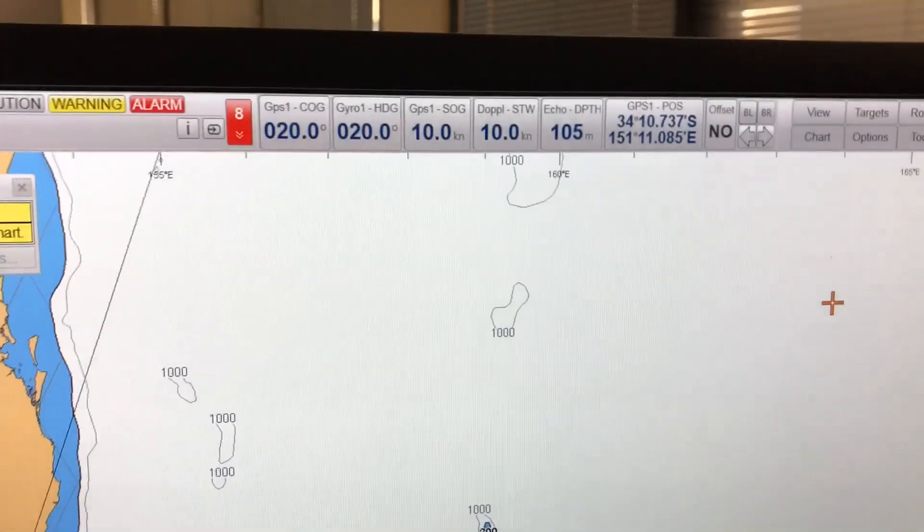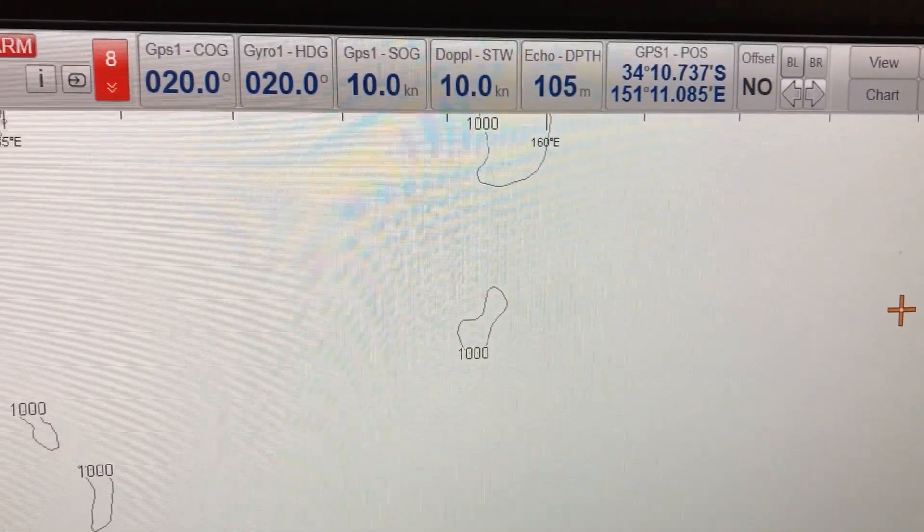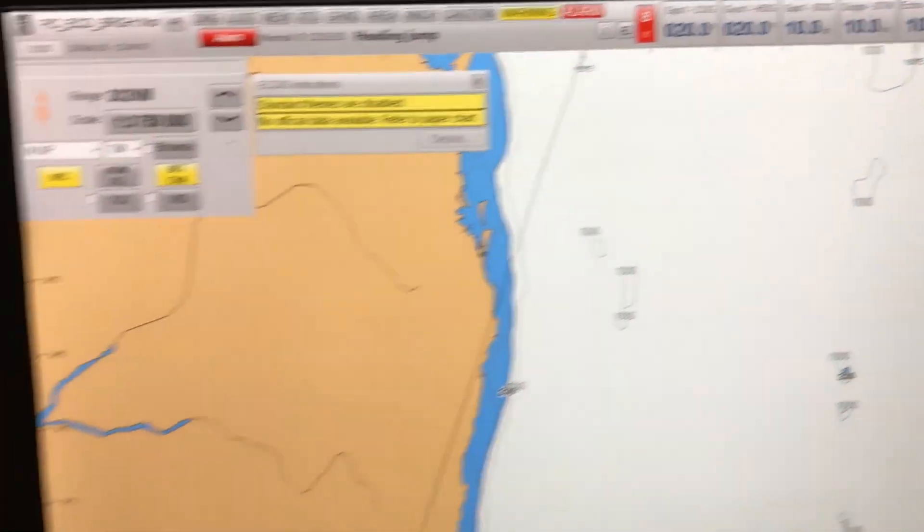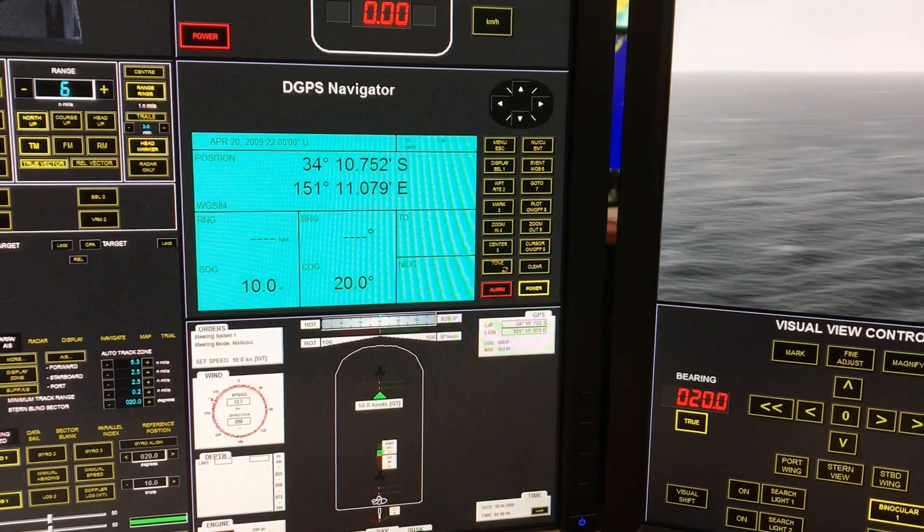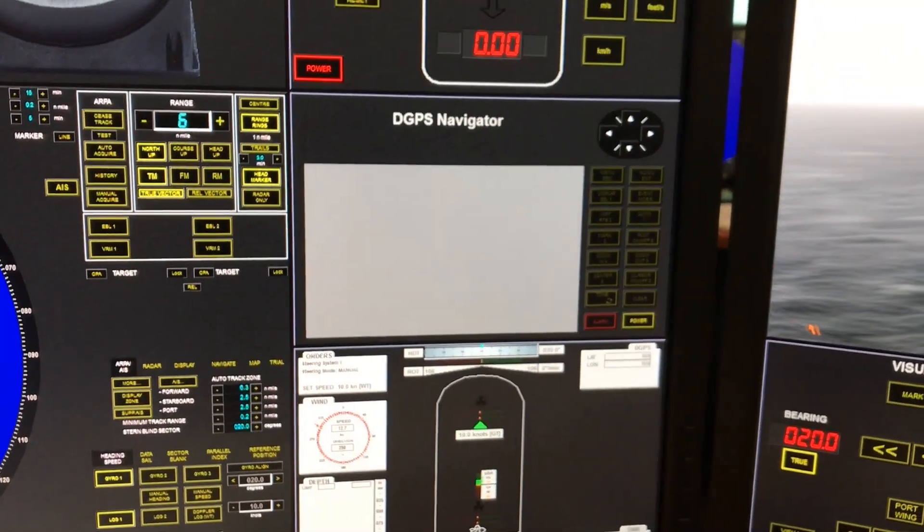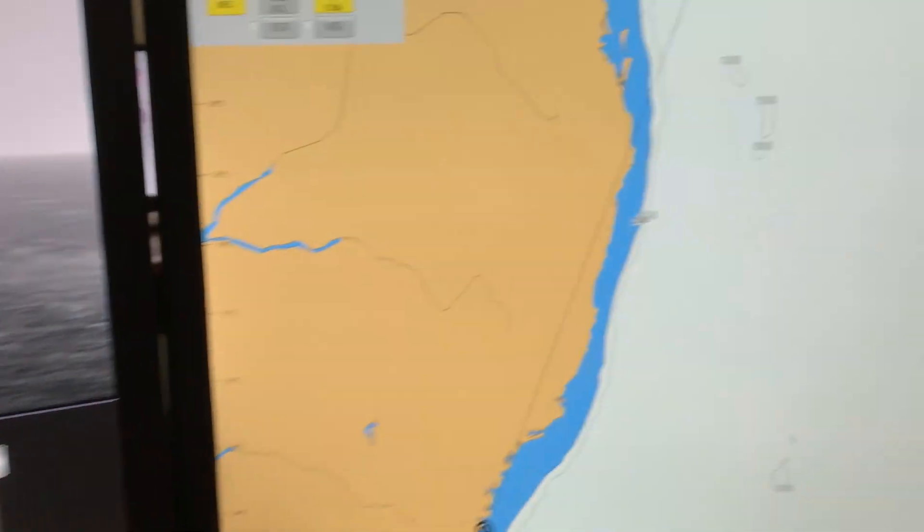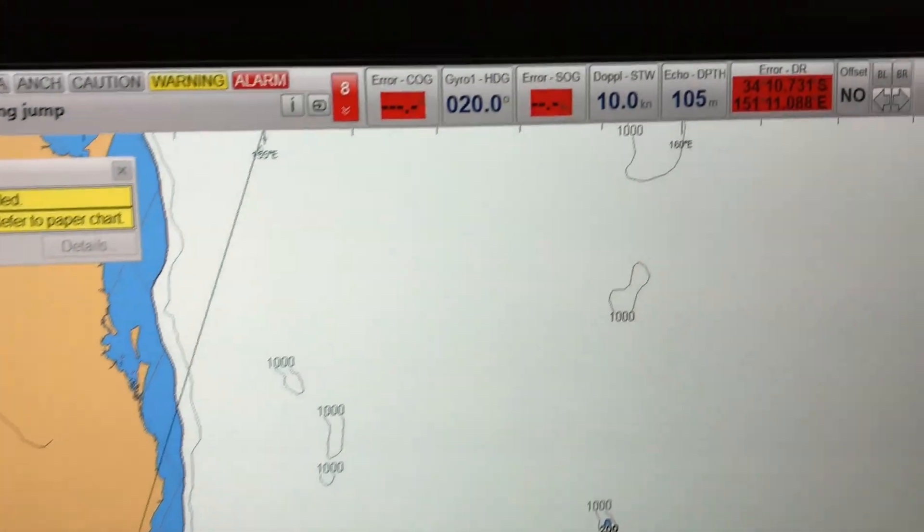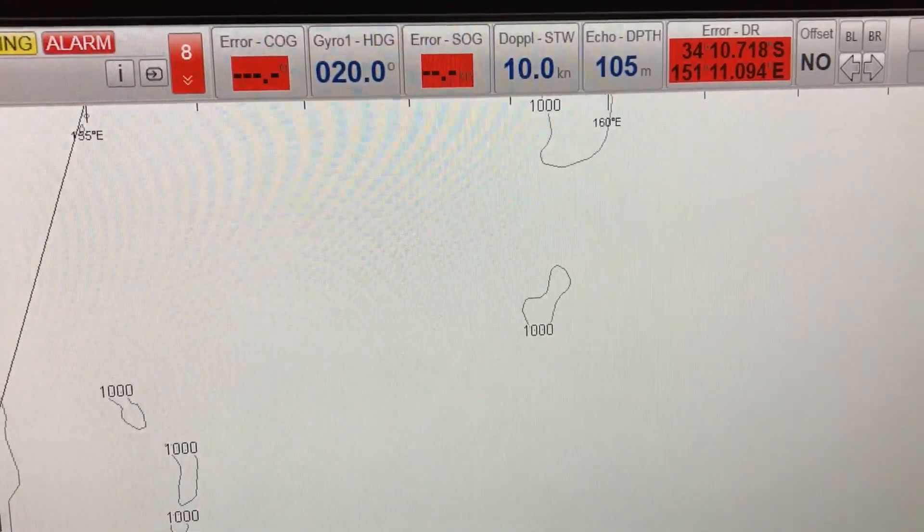Once again, you can see here the course over ground, the heading, the speed over ground, and the GPS position is not in red color before the GPS is switched off. So when the GPS is on, the input that is coming in is reliable, but it is speed over ground and course over ground—it cannot be used for collision avoidance. But as soon as I switch off the GPS, you can see everything turns red. That means now this is not a reliable means of any kind of route monitoring or positioning warning.